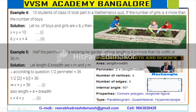Example 4: 10 students of class 9 took part in a mathematics quiz. If the number of girls is 4 more than the number of boys, let the number of boys and girls be x and y respectively. Then x plus y is equal to 10, and y is equal to x plus 4. Please see the diagrams for your understanding about linear equations.